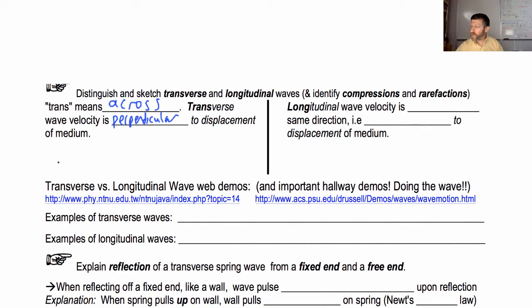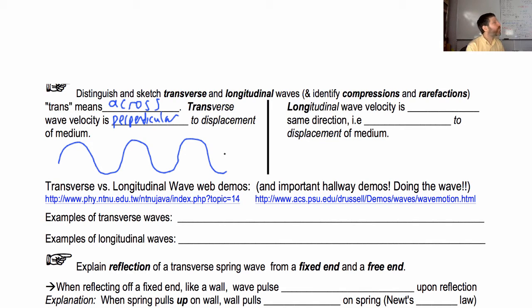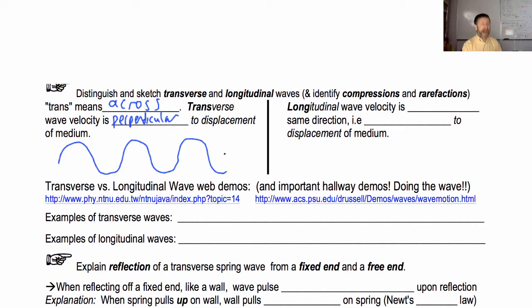Here is a drawing of a transverse wave. It looks just like a sine wave. You can have different shapes — square waves, triangular waves — but a very common type of transverse wave looks sinusoidal. The two things that are perpendicular to each other in a transverse wave are the velocity and the displacement of the medium: you're moving the medium up and down, but the wave is going to the right.